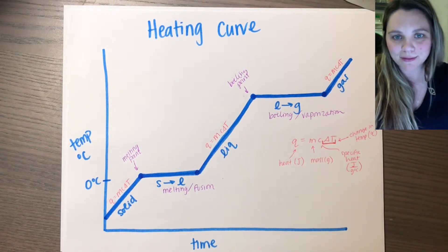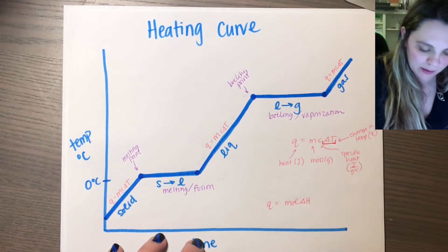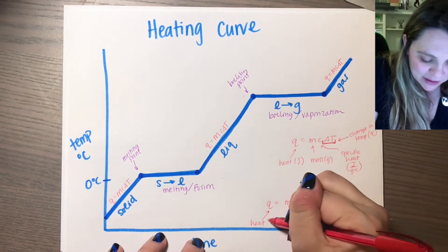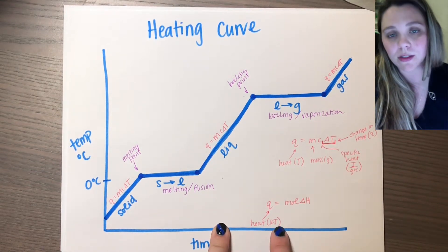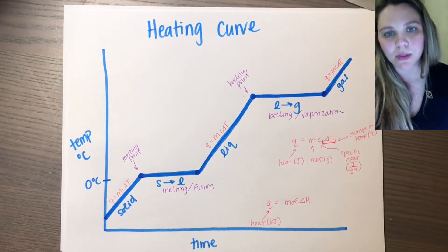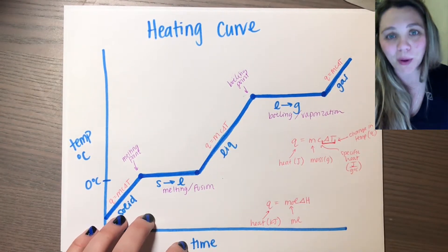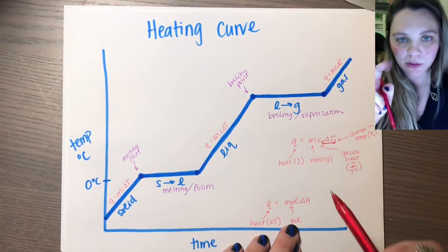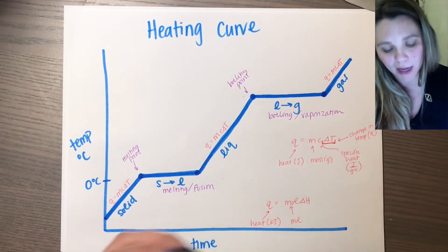There is another equation that we all get to learn, which is Q equals mole delta H. Q is still heat — but the trick is, this Q is now in kilojoules. Q equals MCAT, your Q is in joules. Q equals mole delta H, your Q is in kilojoules — just be careful and make sure you know how to convert between joules and kilojoules. Moles is moles, it's in units of moles. The only difficult thing is you've got to make sure you know how to convert between mass in grams and an amount in moles — so you have to make sure you know how to use molar mass going between grams and moles.